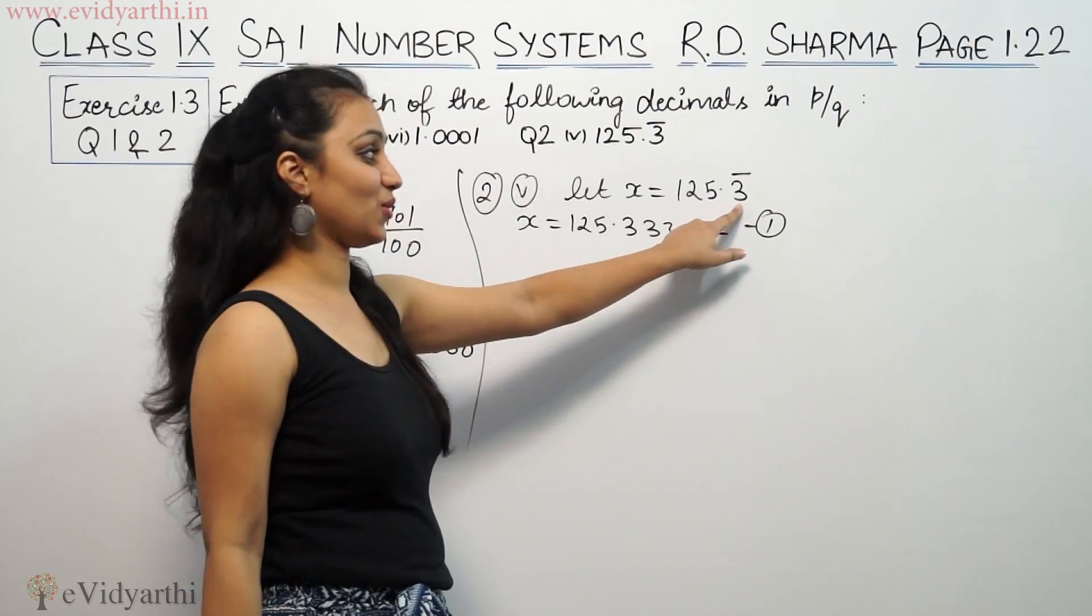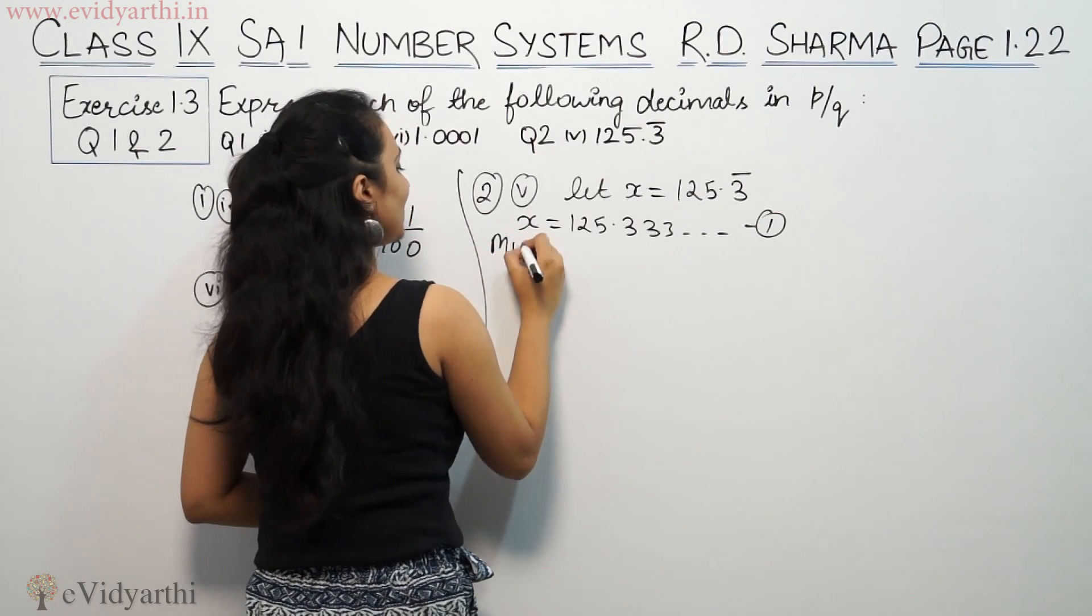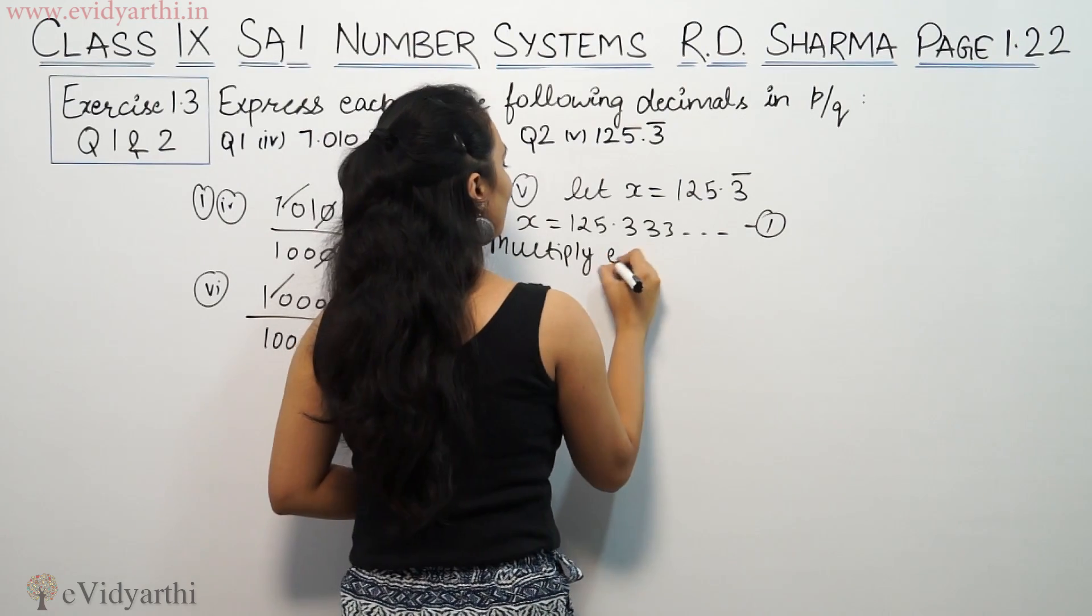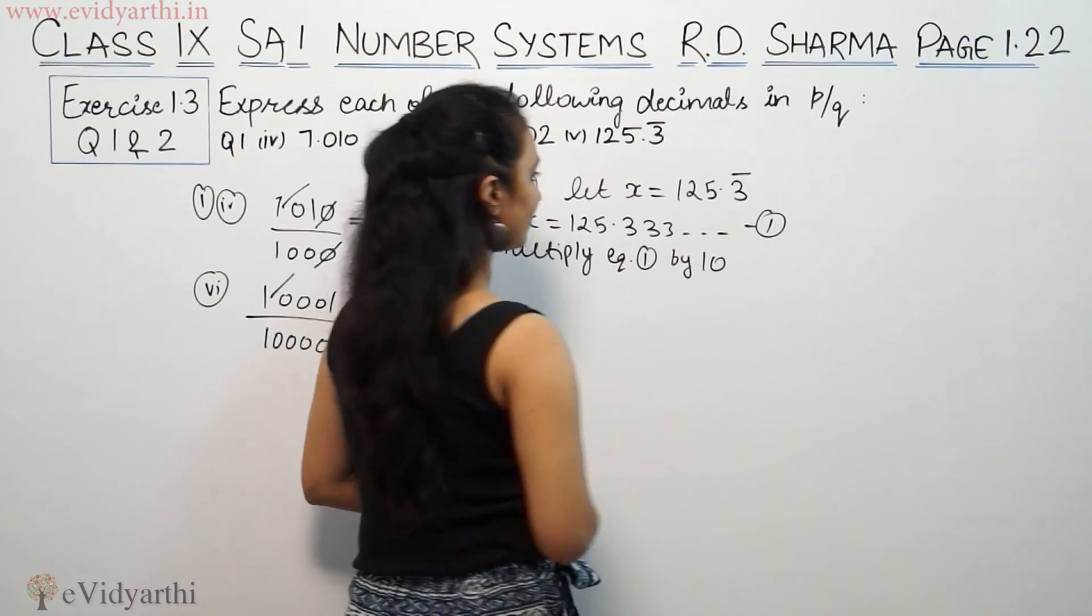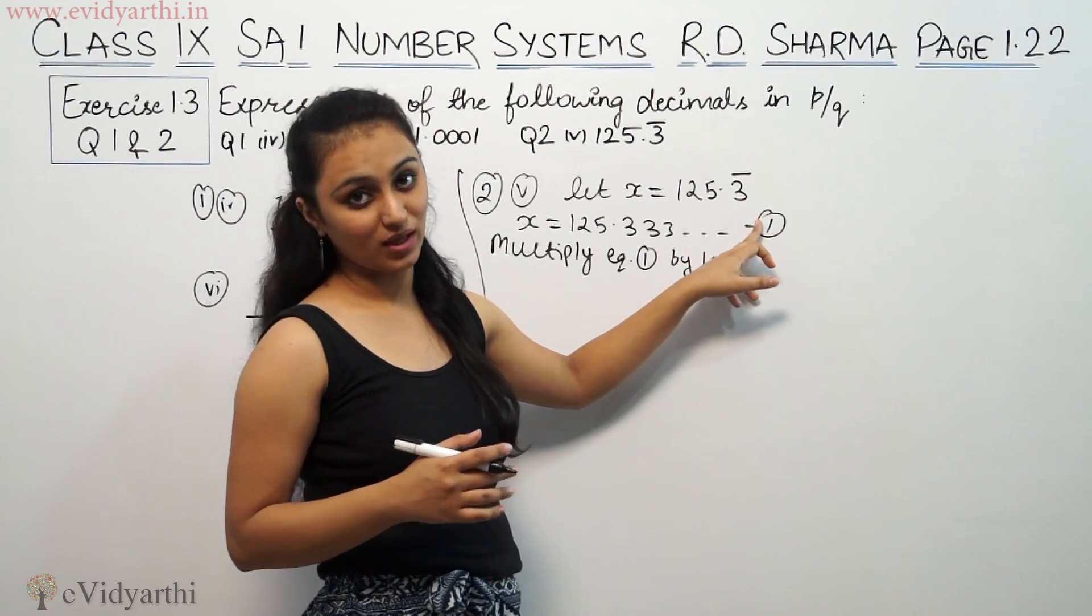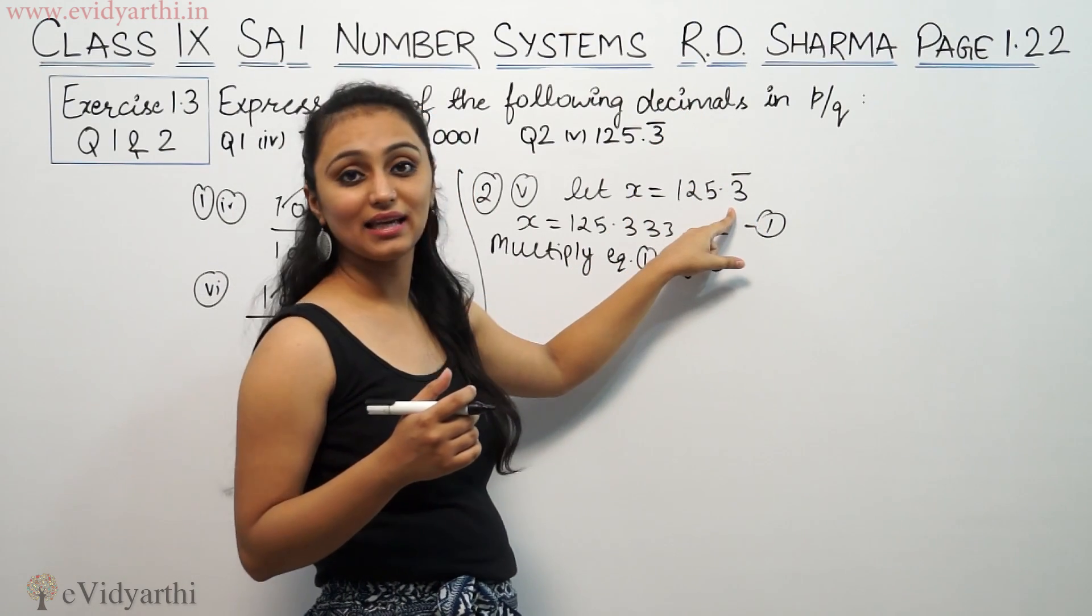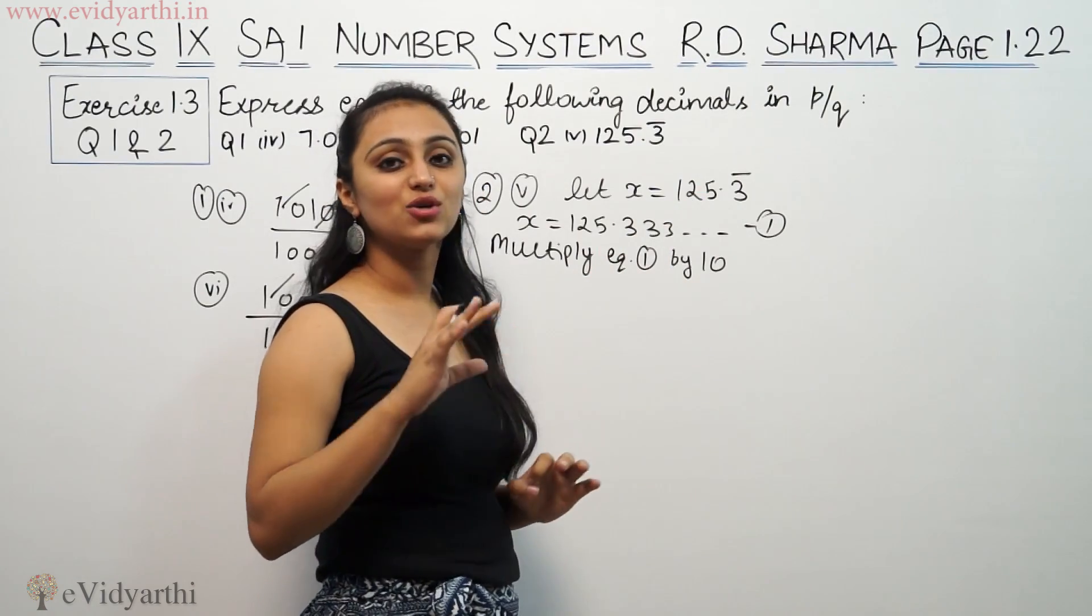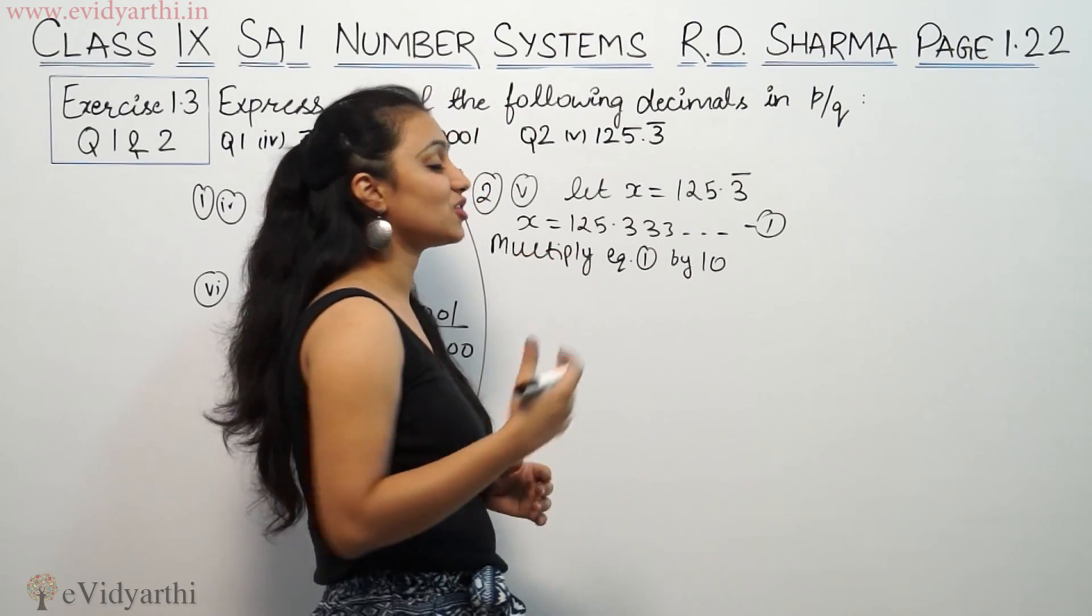Now, the recurring part is only one digit after the decimal, so let us multiply equation 1 by 10. The key is that the bar is just on the decimal. If the bar is on more digits, then we will shift the decimal accordingly. In the last few videos, we covered questions on that, so you must watch those and do all these questions.